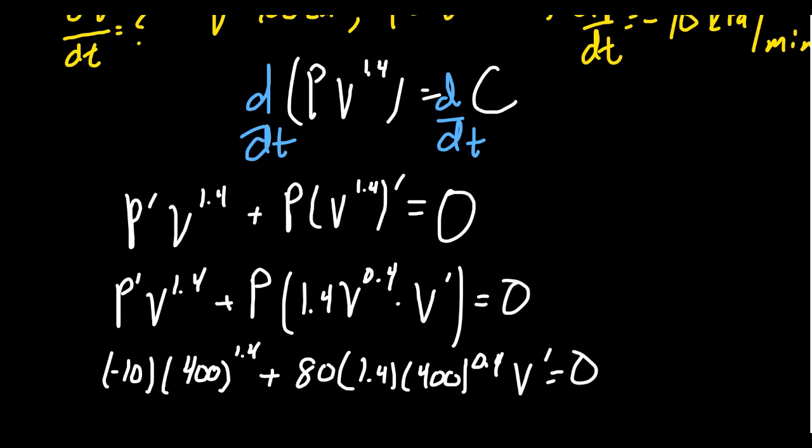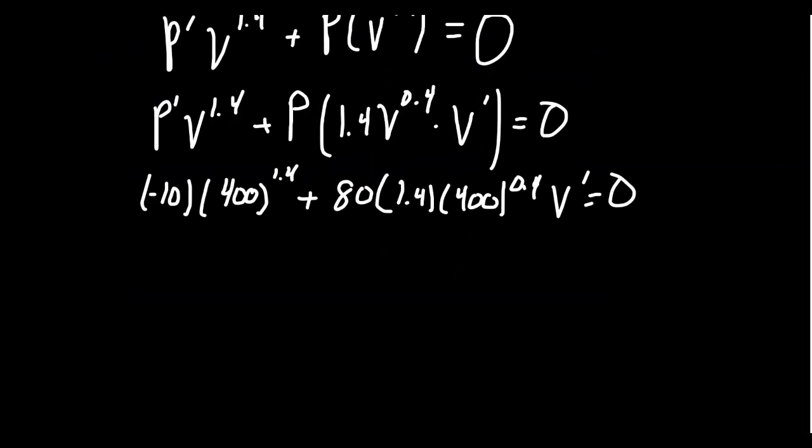So now when you look at this, we've got a bunch of numbers. We could try to crunch them in our calculator and go from there. But essentially, we have to solve this linear equation for V prime, which we don't know. So we're going to move this quantity to the other side of the equation.